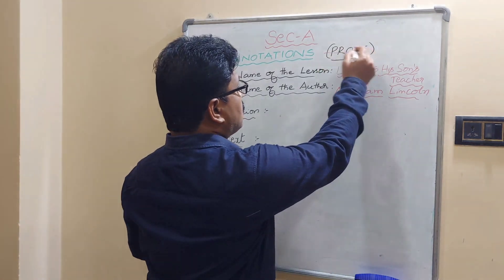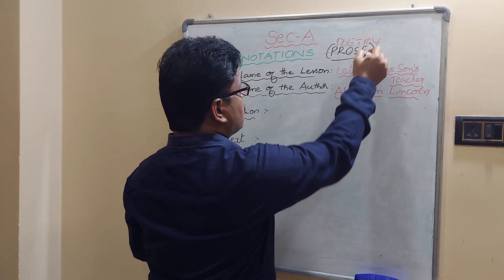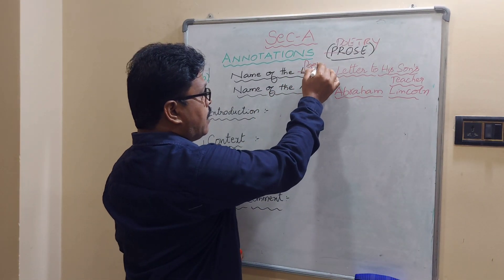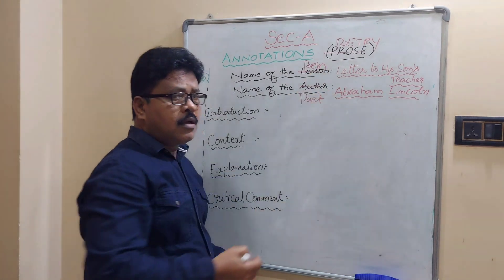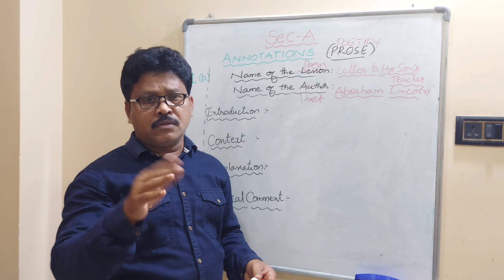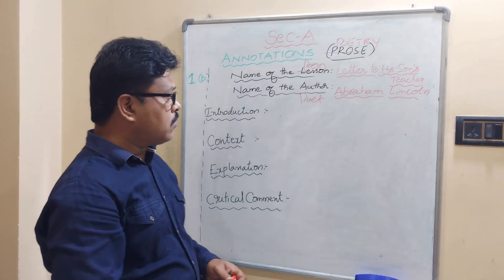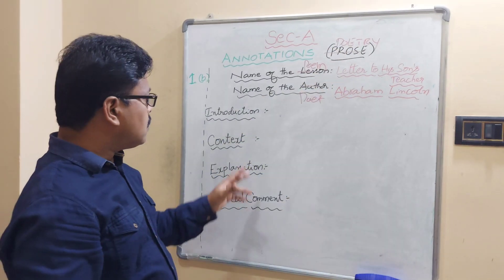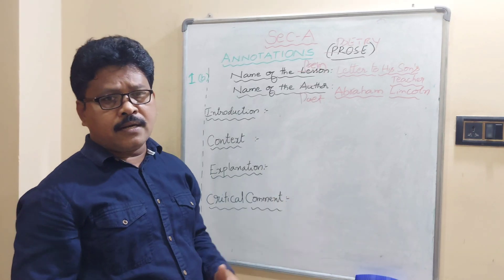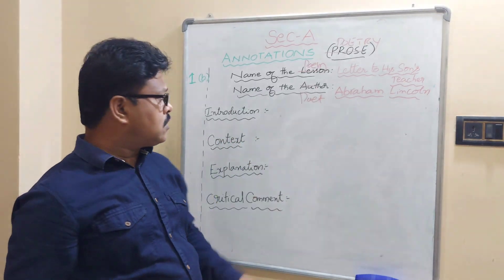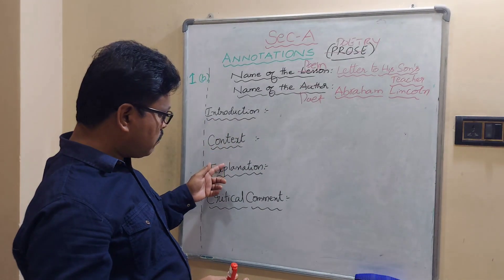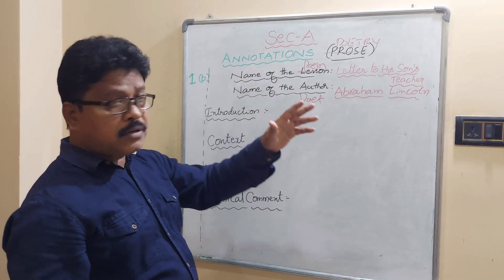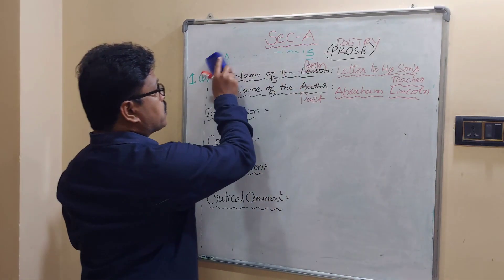If it is poetry, you change the format: instead of 'name of the lesson' and 'name of the author,' you write 'name of the poem' and 'name of the poet.' For example, name of the poem: 'This Is My Prayer to Thee My Lord'; name of the poet: Rabindranath Tagore, also called Vishwakabi — a multi-talented genius. Write three or four sentences about the poet in the introduction. Then follow Context, Explanation, and Critical Comment.